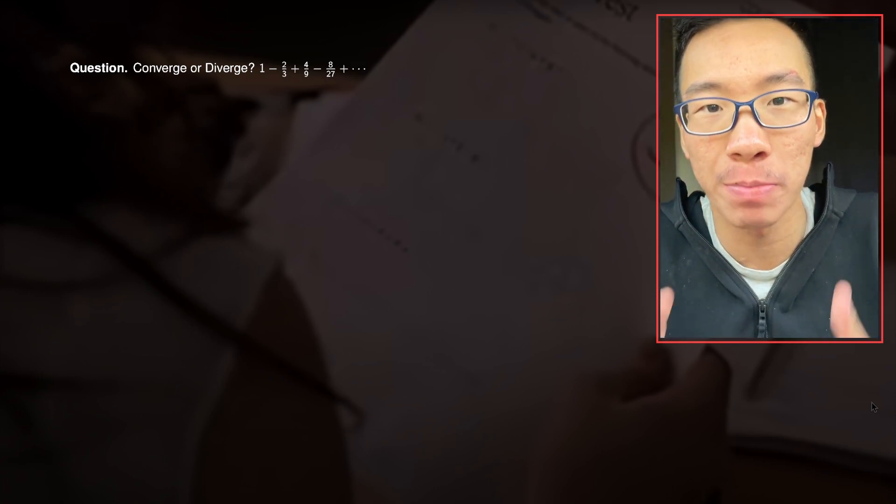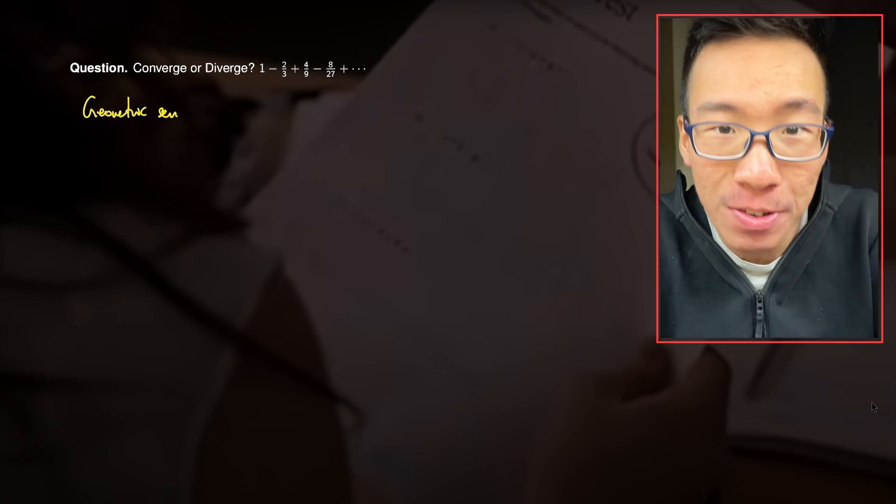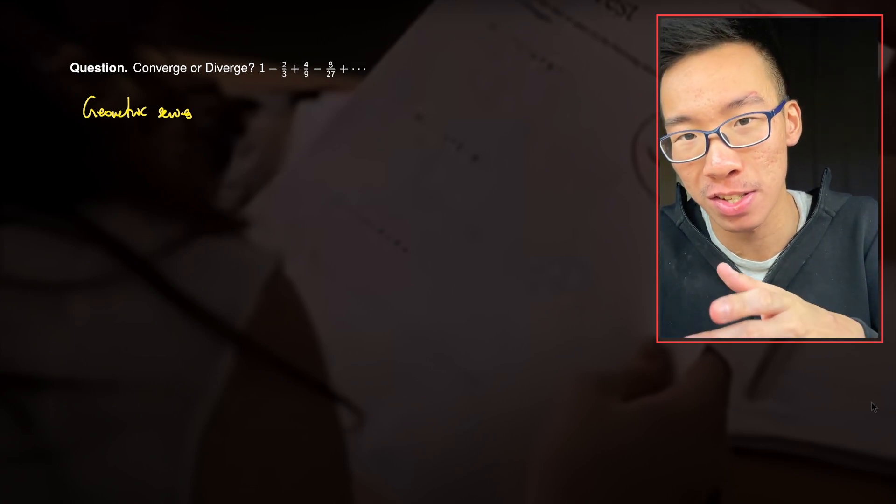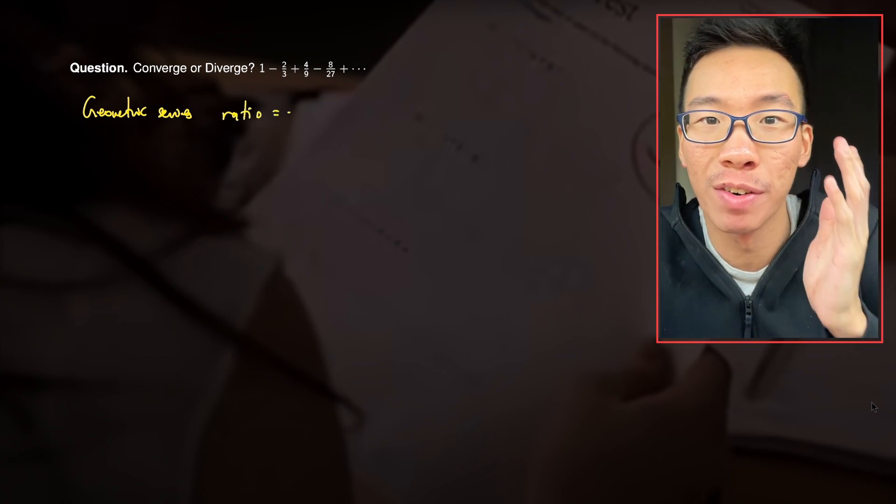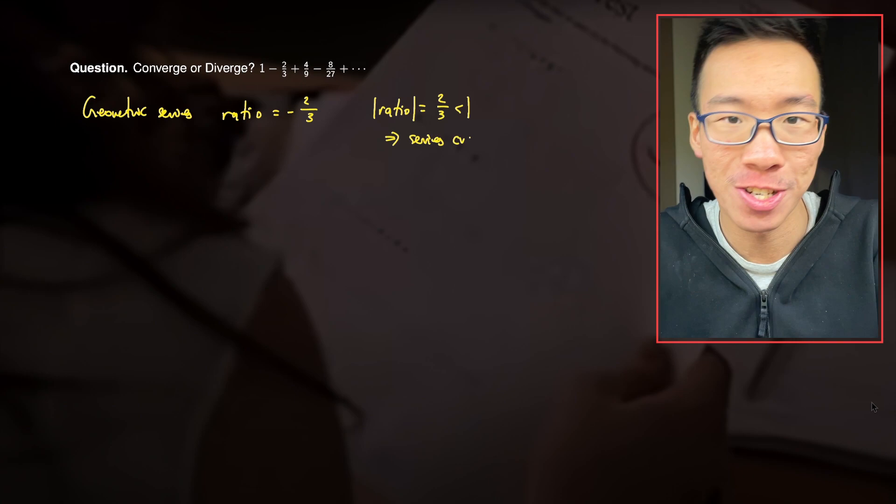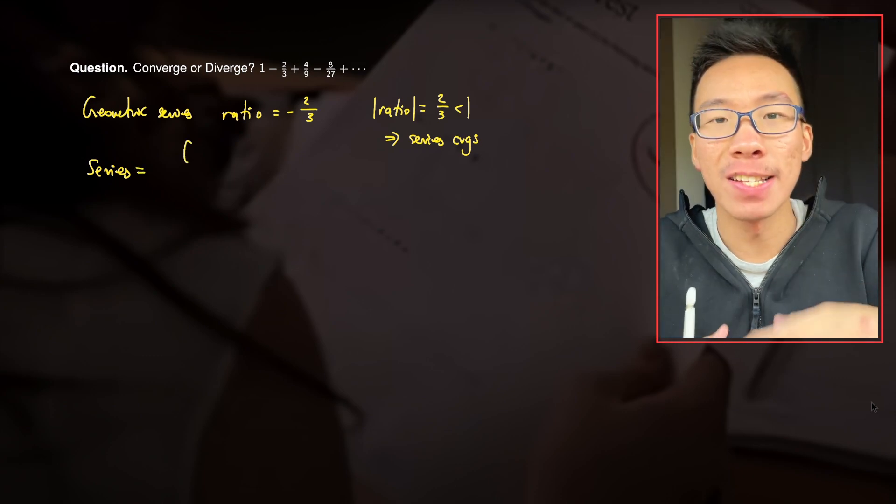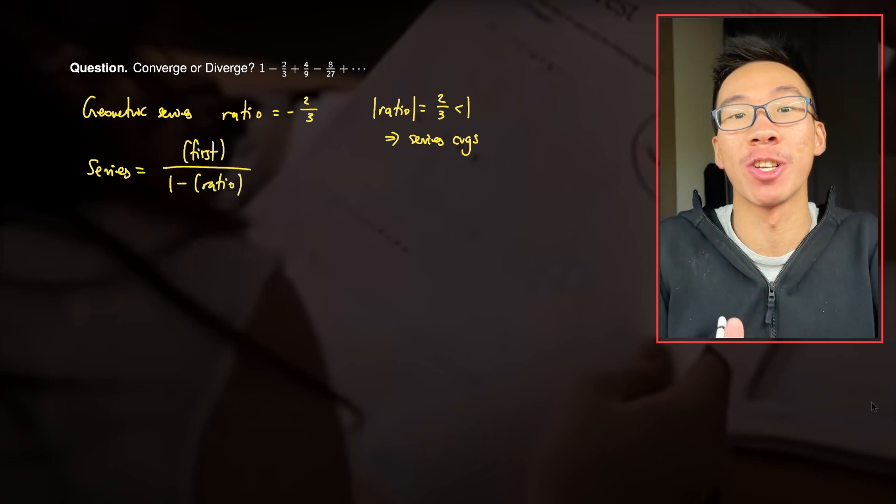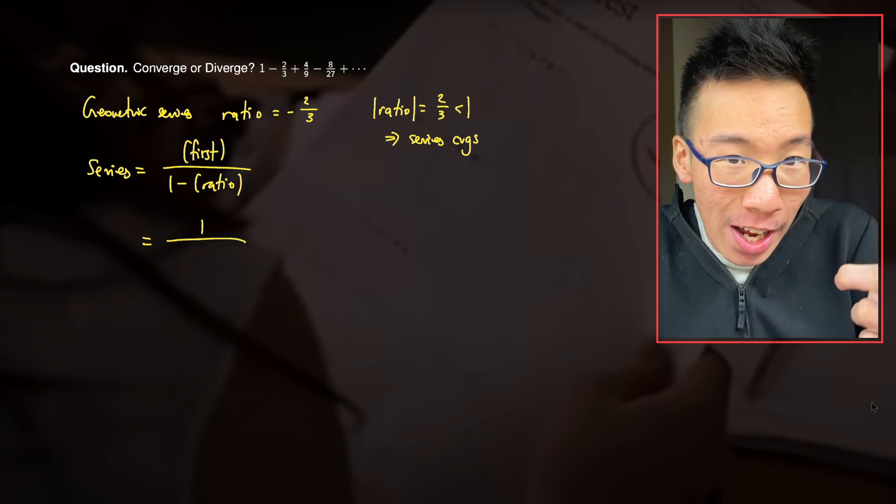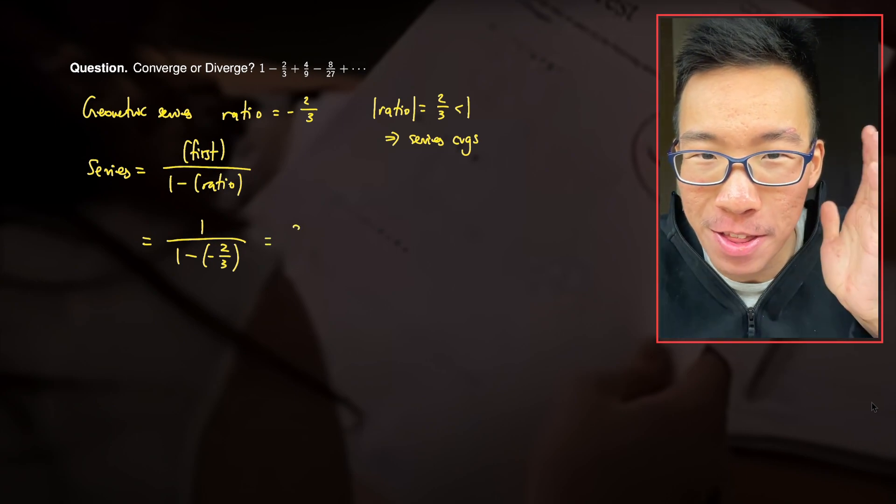On convergence series, we have convergence series 1 minus 2 thirds plus 4 over 9 minus 8 over 27, so on and so forth. We need to check whether it converges or diverges. You might be able to quickly observe that this is actually a geometric series. And the common ratio, in other words, what's the term you multiply to get the next term, is negative 2 over 3. And since the magnitude of this ratio is smaller than 1, the series must converge. Furthermore, we know what it converges to. The sum of a convergent infinite geometric series is equal to the first term over 1 minus the common ratio. In this situation, the first term is 1 and the ratio is negative 2 over 3. And doing a bit of mental calculations, this should be 3 over 5.